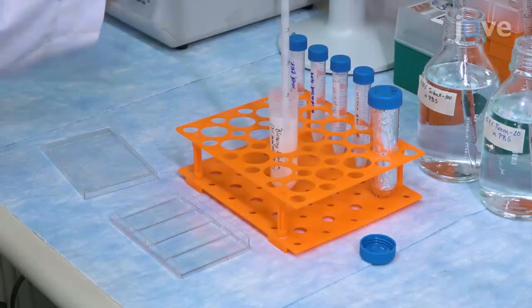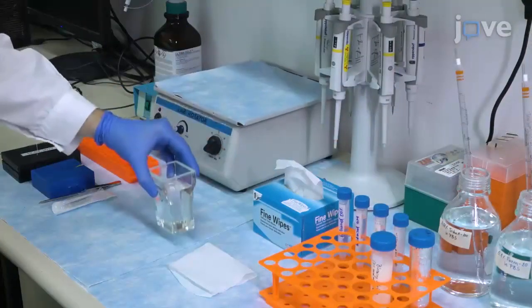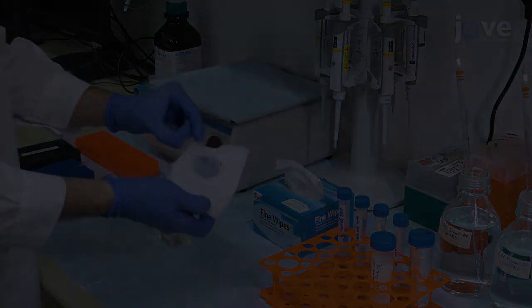Pipette the blocking solution into a plastic box. Then, remove the microarray slide from the Coplin jar. Use a fine wipe to dry the non-DNA side and edges of the slide.